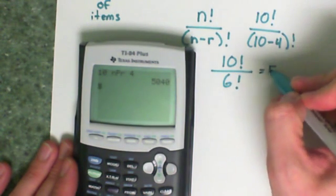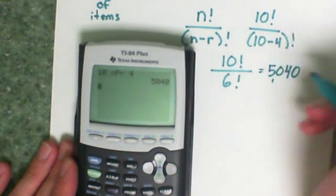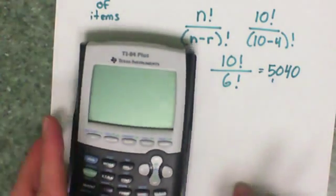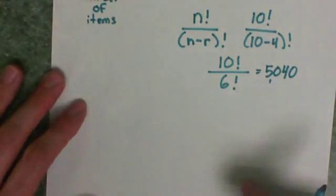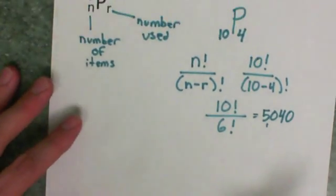That is going to come out to 5,040. So there's 5,040 different ways that people could win the first four places of a race if there are ten people in that race.